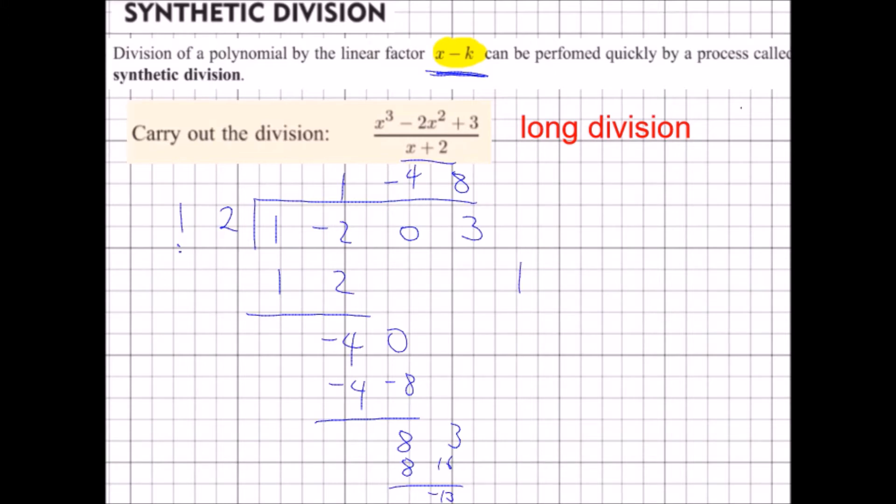Right, so therefore, my polynomial I can express as the quotient, x squared minus 4x plus 8, multiplied by the divisor x plus 2, plus the remainder of negative 13. So that would be p of x.